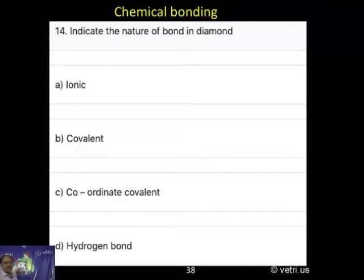Question number 14. Indicate the nature of bond in diamond. A. Ionic. B. Covalent. C. Coordinate covalent. D. Hydrogen bond.